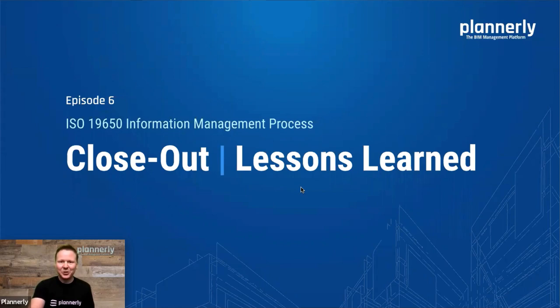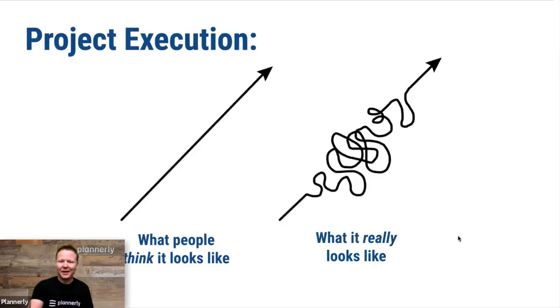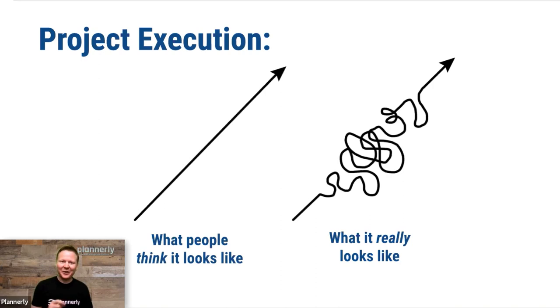If we followed those first five webinars and we prepared the team for great project success and the delivery of the right asset information model, at the end of it, everyone's happy. But how did we get there? Well, project execution is not really a straight line, not usually. There's many turns and twists and ups and downs for the project team that they have to work around, and they'll find better ways of doing things, ways not to do things along the way.